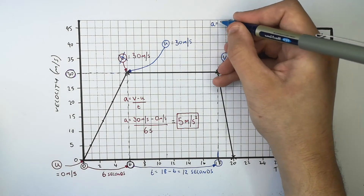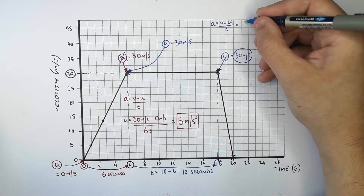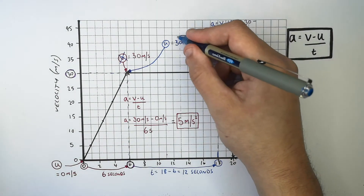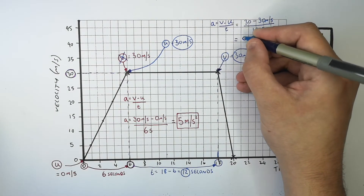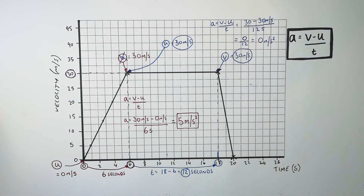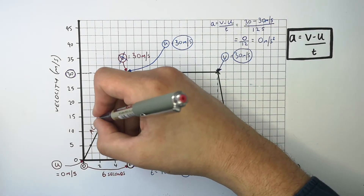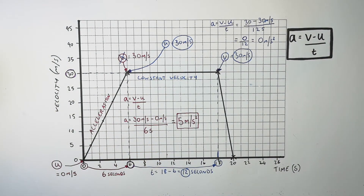We recall the equation a equals v minus u over t and substitute in the numbers. It's a final velocity of 30 metres per second minus an initial velocity of 30 metres per second, divided by 12 seconds. The change in velocity is 0 metres per second, so 0 divided by 12 seconds gives an acceleration of 0 metres per second squared. The car is not accelerating because the velocity does not change — there is constant velocity, so there is no acceleration.